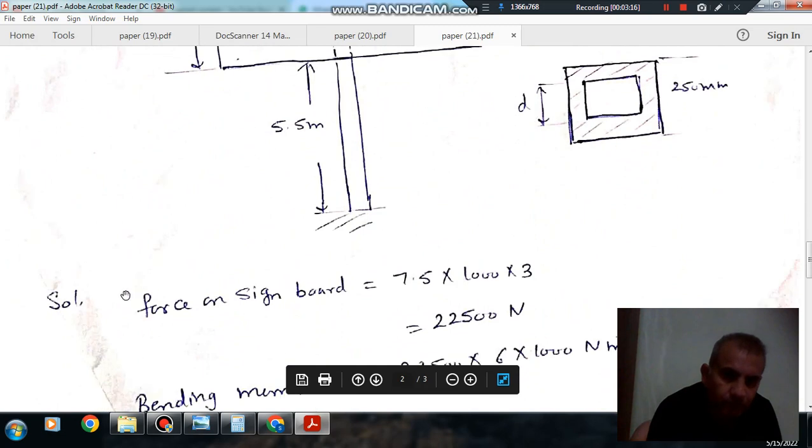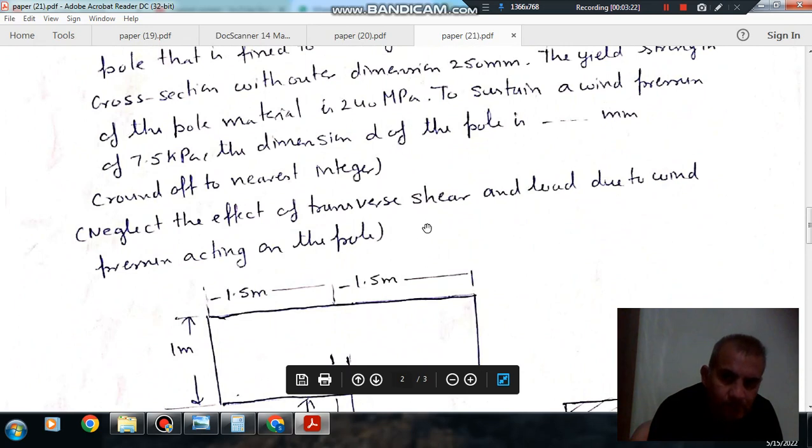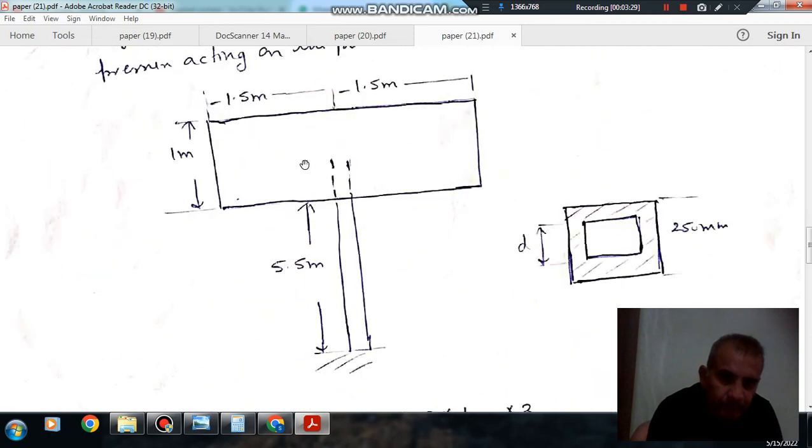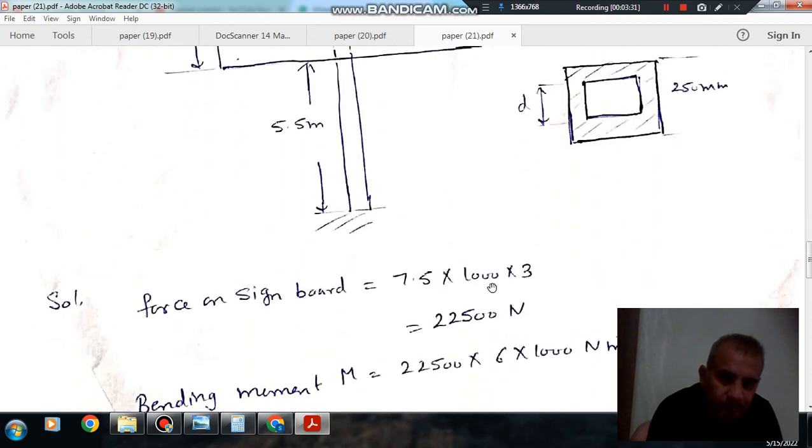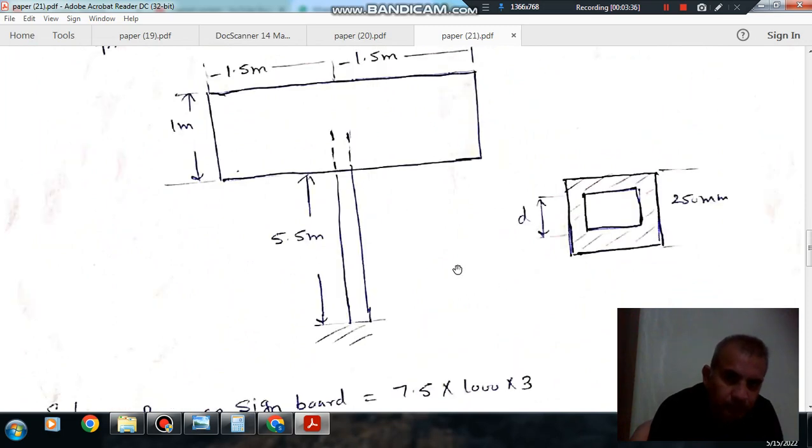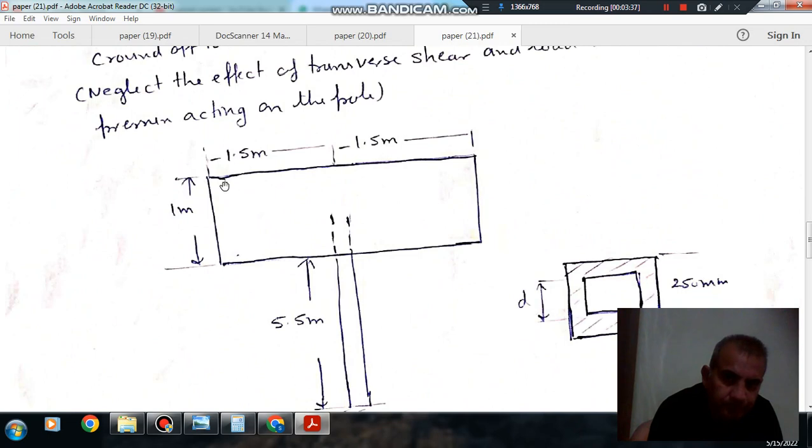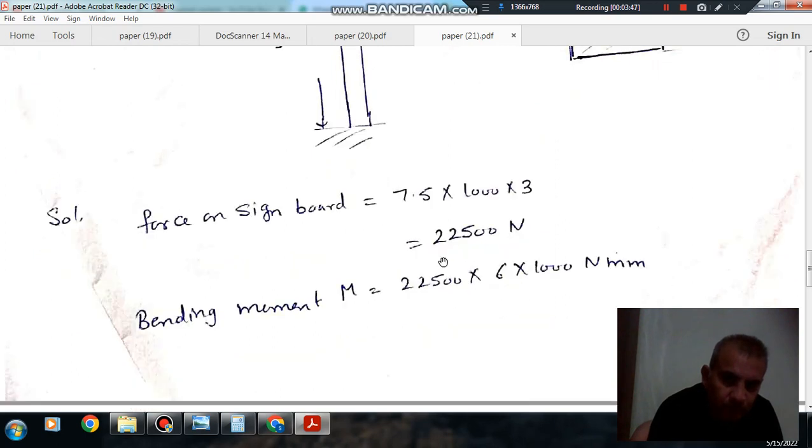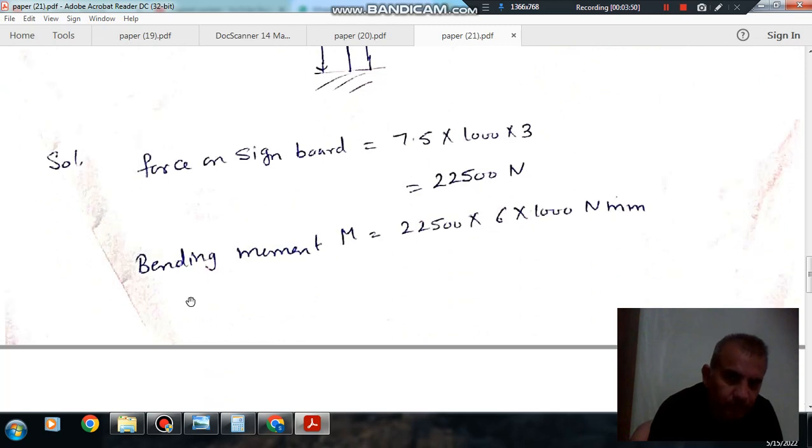So when the wind flows, the force on the signboard is 7.5, that is pressure multiplied by area. So area is your 3 into 1000, that is 22,500 Newton.